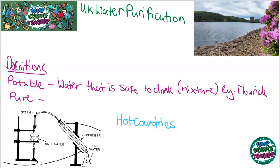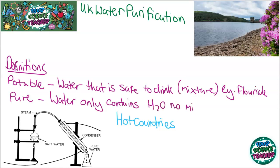Pure water can be made though, and pure water means that the water only contains H₂O, so there will be no minerals or ions present. How we get our water in the UK — we usually collect it from lakes and reservoirs. But in this state it is not safe to drink. This water is dirty water, and we need to do some treatment to it in order to make it safe to drink.